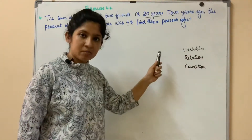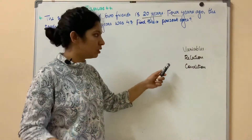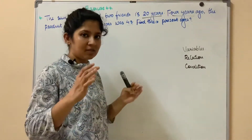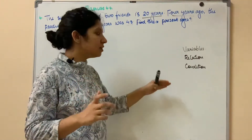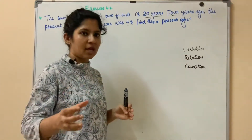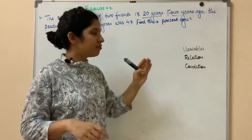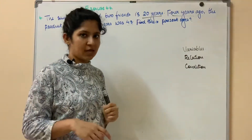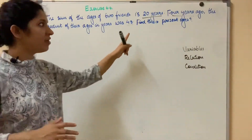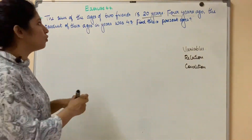First, let's assume the variables. This is a quadratic equation in one variable. If the variables are related to the question, let's find the second step. In the third step, the condition gives us the quadratic equation. What we need to find out is the present ages — that is, the sum of the ages of 2 friends.